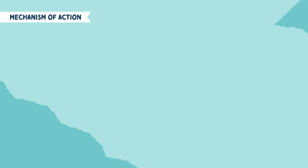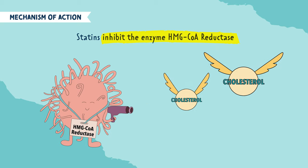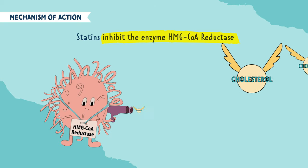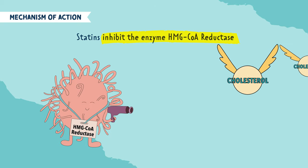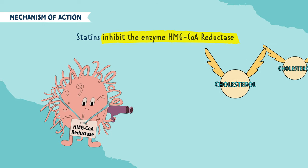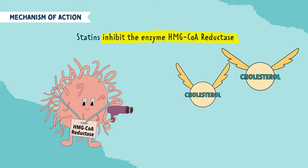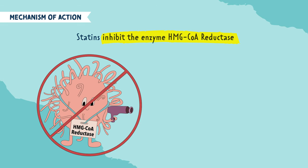Now for the mechanism of action: statins inhibit the enzyme HMG-CoA reductase. This enzyme, which is found in the liver, is needed to make cholesterol. So if we inhibit this enzyme, we're able to lower the amount of cholesterol being made and lower the amount of cholesterol in the blood.